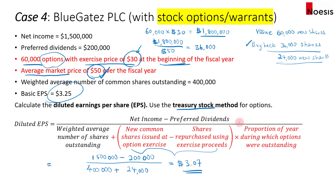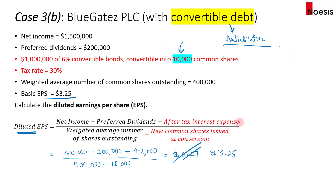We have gone through the basic EPS calculation and three cases of dilutive securities: convertible preferred shares, convertible debt, and stock options or warrants. Be careful when calculating diluted EPS — always compare back to the basic EPS, especially for convertible debt. As we saw, in some cases the diluted EPS can be greater than the basic EPS. In those cases, remember to set the diluted EPS equal to the basic EPS.